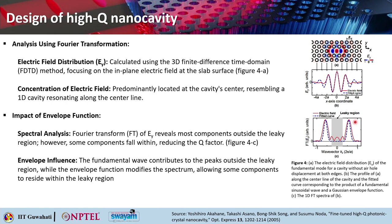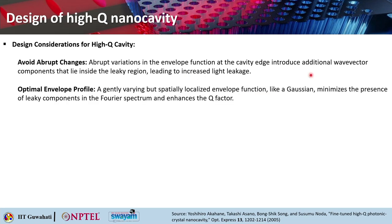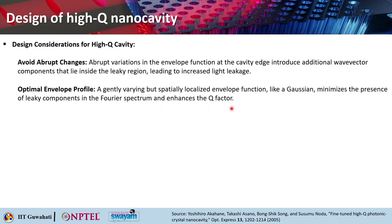The fundamental wave contributes peaks outside the leaky region, while the envelope function modifies the spectrum allowing some components inside the leaky region. For design of a high-Q cavity: any abrupt variation in the envelope function at the cavity edge will introduce additional wave vector components typically inside the leaky region, increasing light leakage. The optimal envelope profile should be a gently varying but spatially localized function — like a Gaussian — to minimize leaky components and enhance the quality factor.